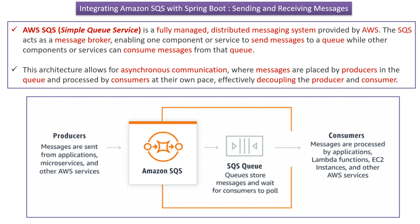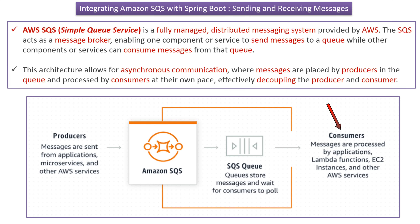In this video tutorial, I will explain how to integrate Amazon SQS with Spring Boot and how to send and receive messages. AWS SQS is a fully managed distributed messaging system provided by AWS. SQS acts as a message broker, enabling one component or service to send messages to the queue while other components can consume messages from that queue. This architecture allows for asynchronous communication where messages are placed by producers in the queue and processed by consumers at their own pace, effectively decoupling the producer and consumer.